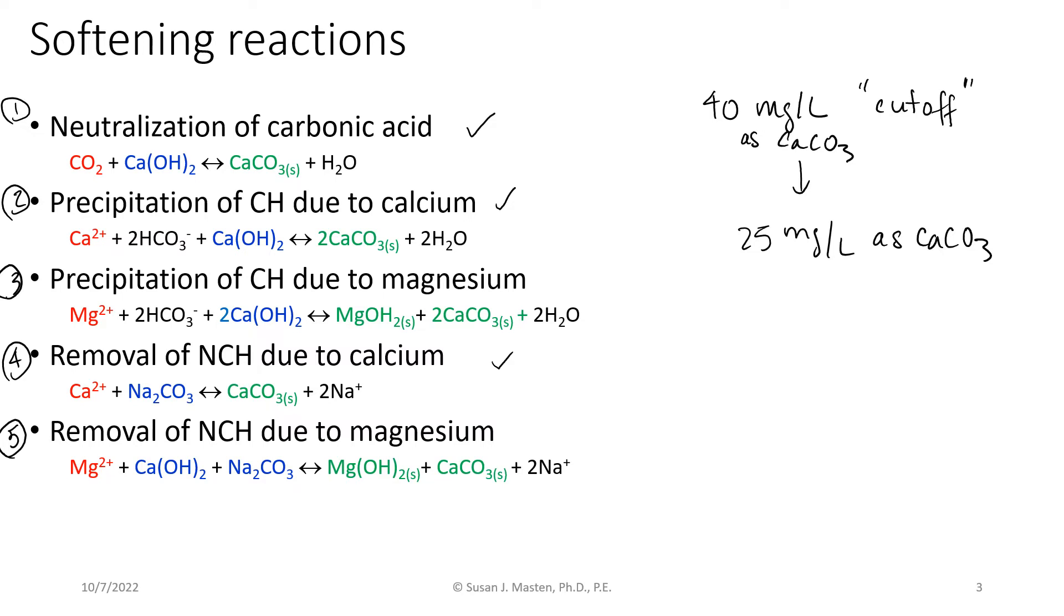Remember, in terms of the pH, if we're removing magnesium, we need the pH to be about 11.3. But if we're only removing calcium, we can operate at a pH of about 10.3. So that helps to govern which of these species we actually remove.